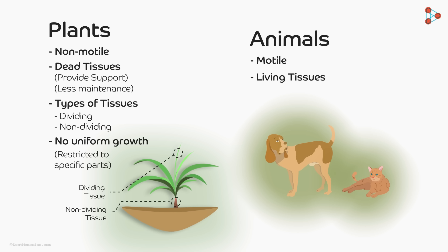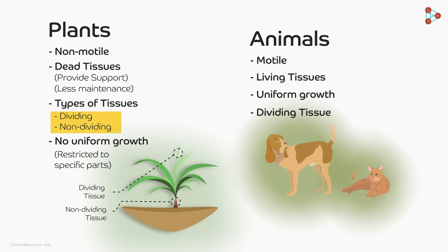This does not apply to the human or animal body. Humans and animals exhibit uniform growth throughout their body, and therefore animals have tissues that divide spread throughout their body parts. In our further videos, we shall look at what these tissues are called as well as the characteristics of each type of tissue.